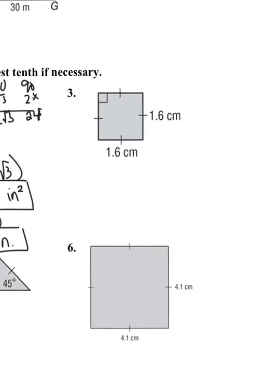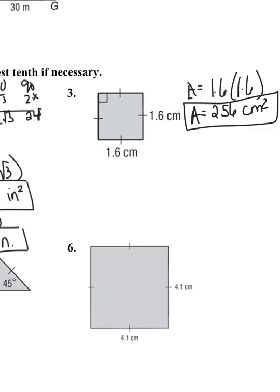Question number 3 — I have a square, which is the easiest one. Area equals base times height; I don't have any slants and don't need Pythagorean theorem. It's just 1.6 times 1.6, or 1.6 squared, giving area equals 2.56 centimeters squared. For perimeter, all sides are equal, so it's 4 times 1.6, giving perimeter equals 6.4 centimeters.